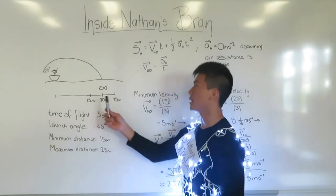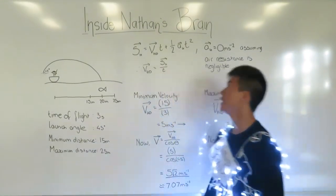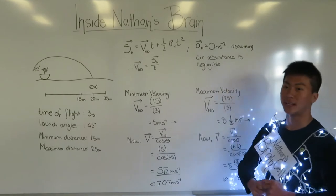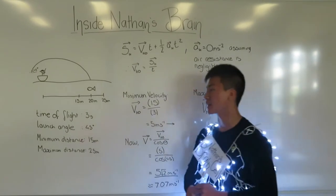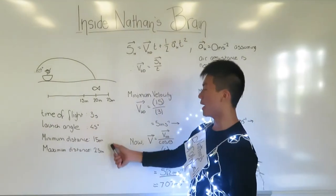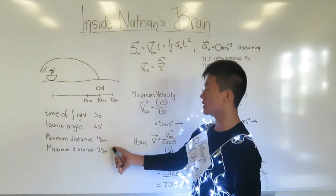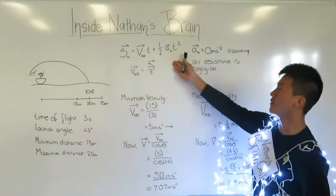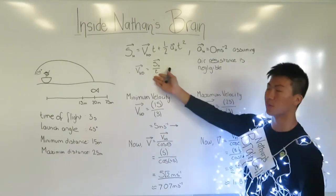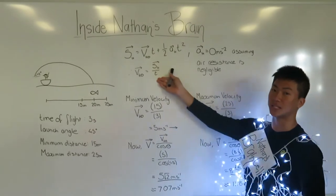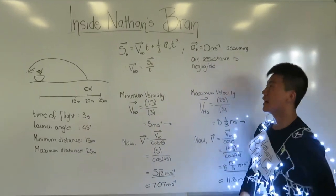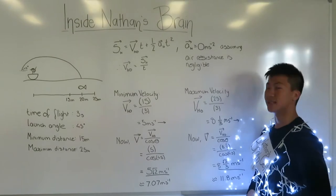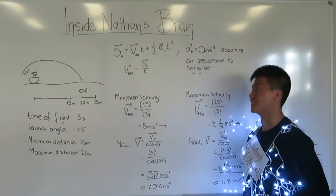Since Nathan's lure follows a parabolic path, projectile motion can be used to find the velocity he'll need to cast his lure in order to hit the targeted range. Since the minimum and maximum distances, launch angle, and time of flight are already known, this formula can be used to find the horizontal component of the velocity. Assuming that air resistance is so little that it's negligible in calculations.